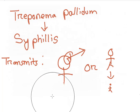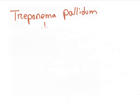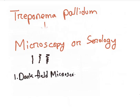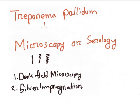It is diagnosed by microscopy and serology. It has thin tight spiral structure seen by special techniques called dark field microscopy, silver impregnation and immunofluorescence staining microscopy.